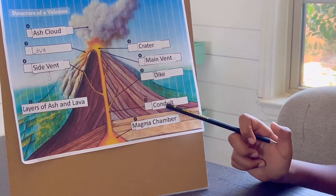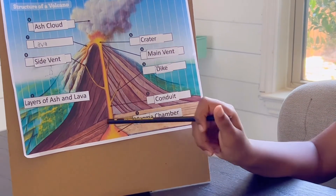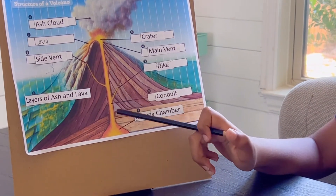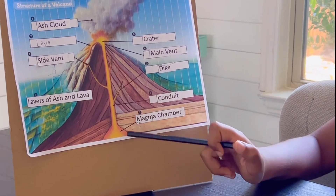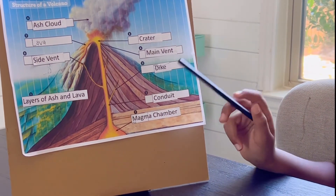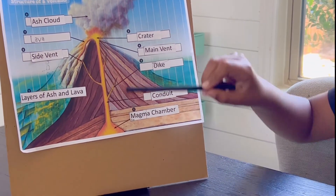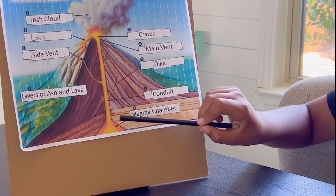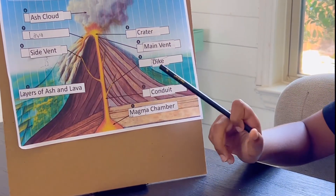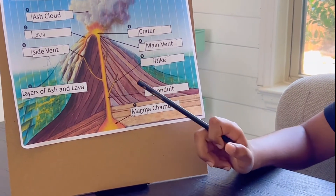Next is the conduit path. This is the path or vent where magma would regularly come out. Next is the dike. When so much pressure is being built when the magma is moving, it creates cracks in the middle, and the lava fills it up.